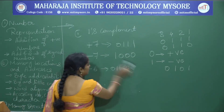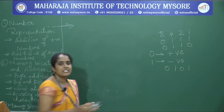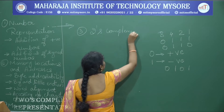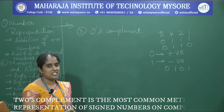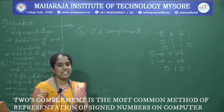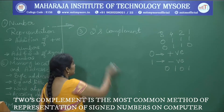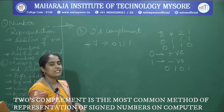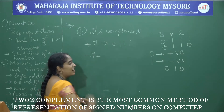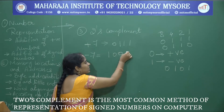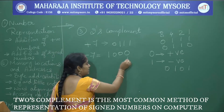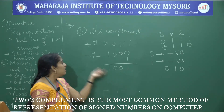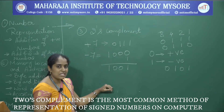The third system is two's complement. In the two's complement system, first take the one's complement of each bit and add plus 1 to that. For plus 7, it is 0111. For minus 7, first take the one's complement: 1000, then add 1, giving 1001. So 1001 is the two's complement representation for minus 7.